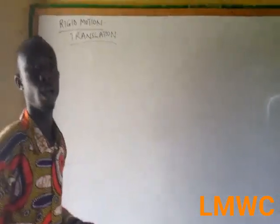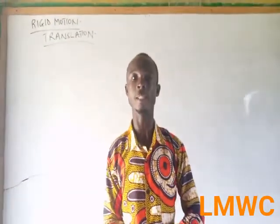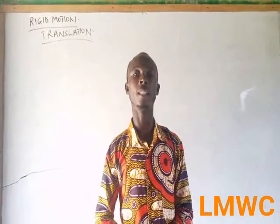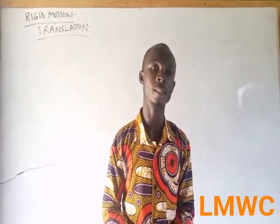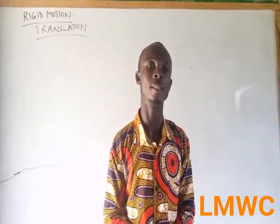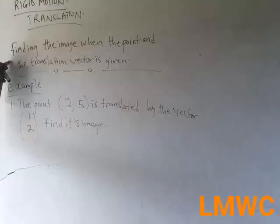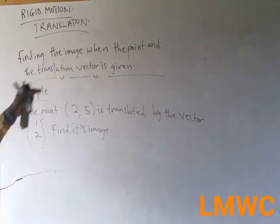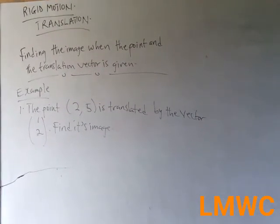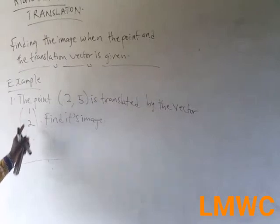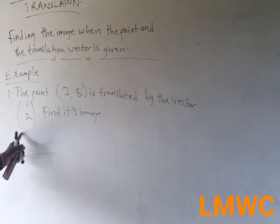This afternoon, I want us to do translation, and this is a heading under rigid motion. Under translation, what it means is that whenever you hear of translate, it means to add. The second part is finding the image when the point and the translation vector is given. This means you will add the point to the translation vector given in the equation.